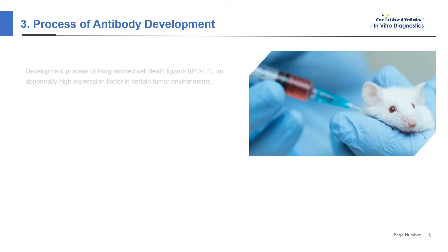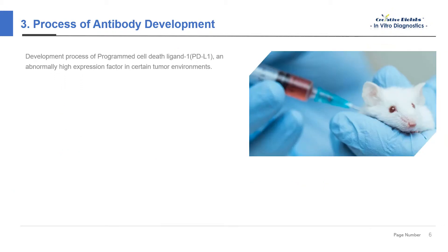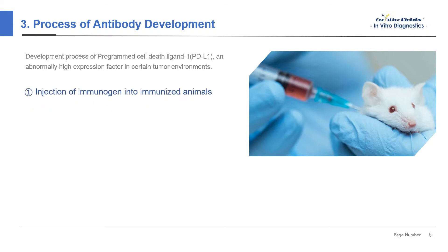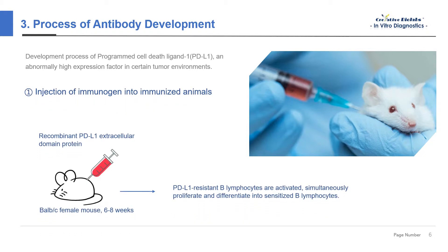We take PD-L1 monoclonal antibody preparation as an example to explain the production process. Programmed cell death ligand 1, also known as PD-L1, is abnormally highly expressed in certain tumor environments. It can inhibit the immune system and promote tumor progression, resulting in tumor immune escape. In order to develop PD-L1 antibody, the first step is to inject mice with antigen to obtain specifically immune B lymphocytes.